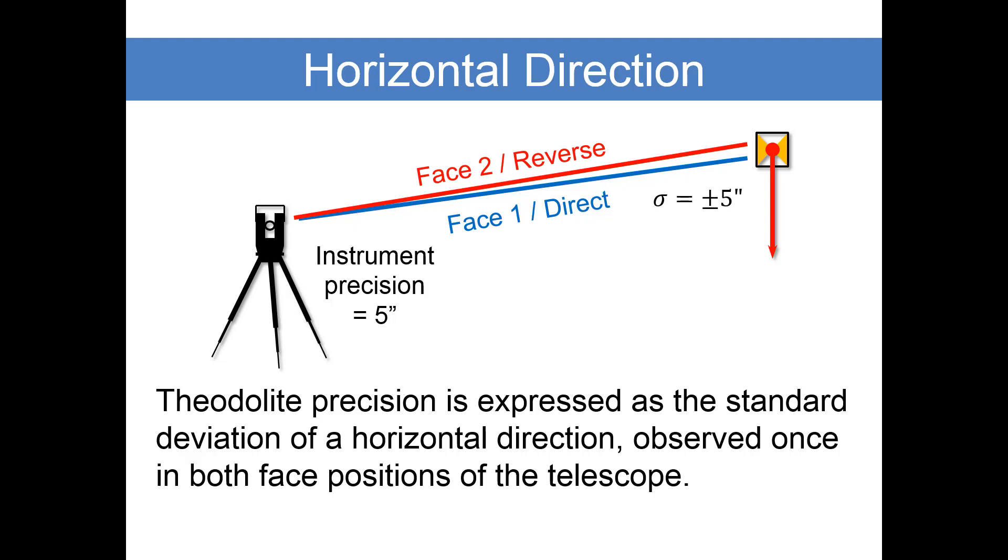The precision, if it's a 5 second instrument, is the standard deviation of those two pointings, plus or minus 5 seconds.